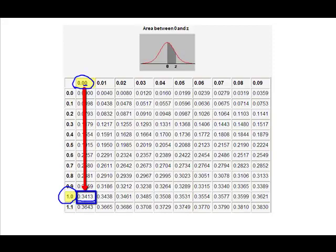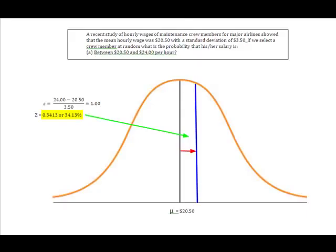And I determined that the z-value is 0.3413. So what I was looking for was the percentage or the probability that the salary of one of these people is between $20.50 and $24.00. Because it wants to know what's the probability that it's between, I'm looking at the area between the mean and this value right here. So it's this area of the curve right here. And we know from having calculated our z-score that it's 34.13% or 0.3413.